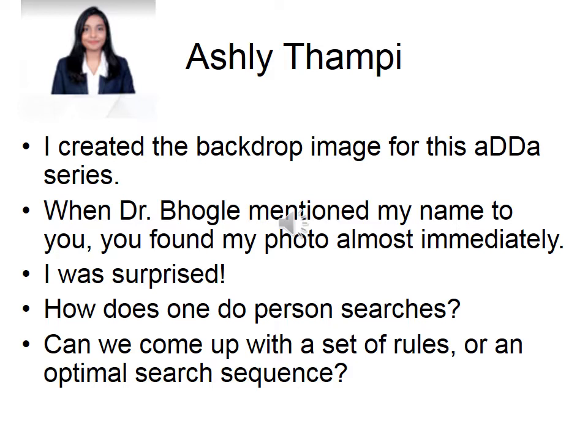If you have some other background information, then you put that in. For example, if that person has ever been at a university, then you put in as a site: colon, star dot, dot the university name. Or if you don't know the university name, you just say dot edu if it is the United States — other countries have different things. In India it's dot ac dot in and so on. So you have to know something about that person before you can actually search. Blind search is often very, very difficult.